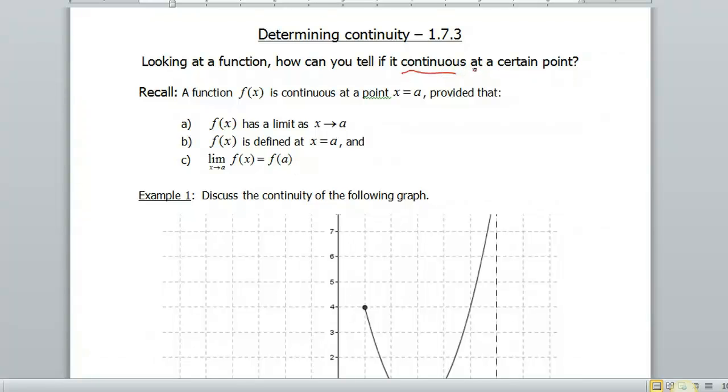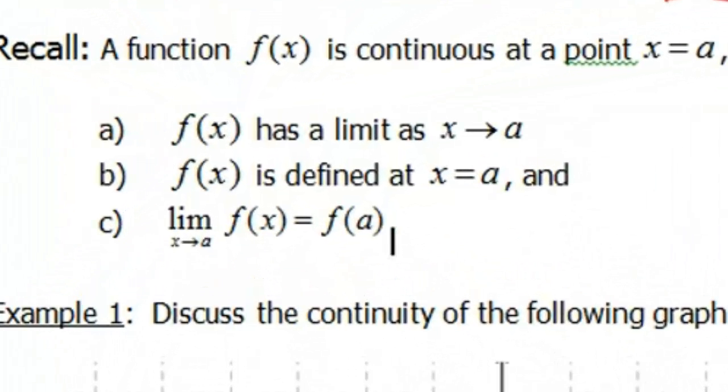Recall from the text that the definition of a function being continuous at a point x equals a has to satisfy three conditions. The function has to have a limit as x approaches a. f(x) has to be defined at x equals a, and those two values have to be the same. So the limit as x approaches a of f(x) has to equal f(a).